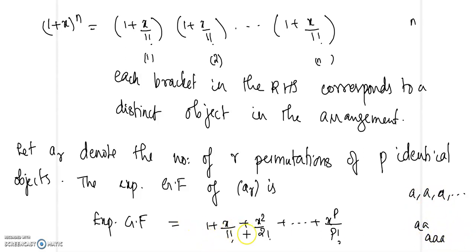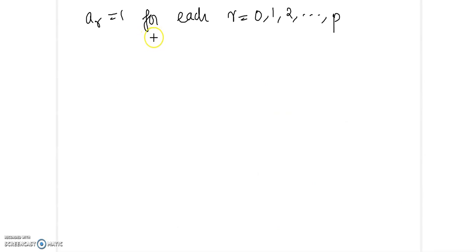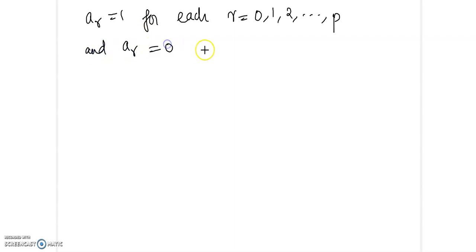So all the A_r values are going to be equal to 1. That is, A_r equals 1 for each r equal to 0, 1, 2, up to P. And A_r equals 0 for r greater than P.